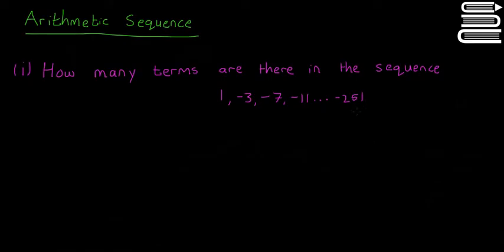So minus 251 is the last term in the sequence. From 1 to minus 251, we have to find out how many terms there are. We're not going to write them all out — that'll take forever — we're going to do it using maths. The first thing we're going to do, as always, is write out the general term for the sequence.